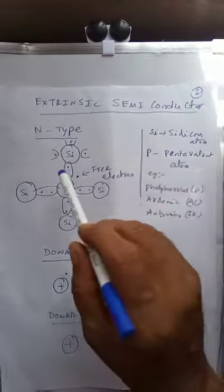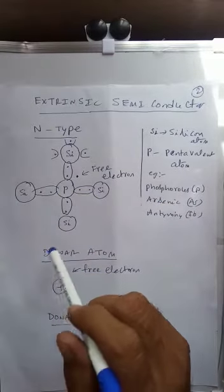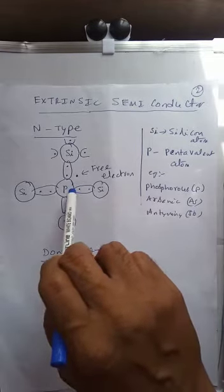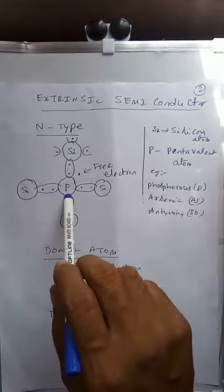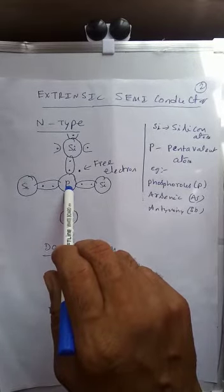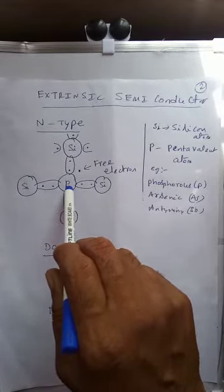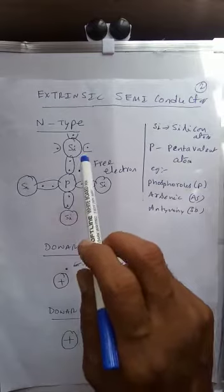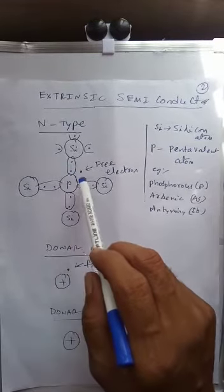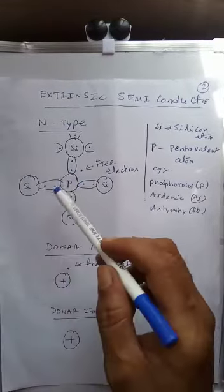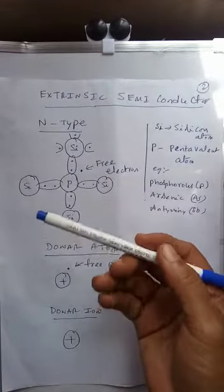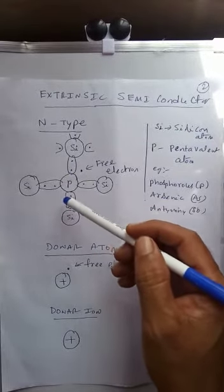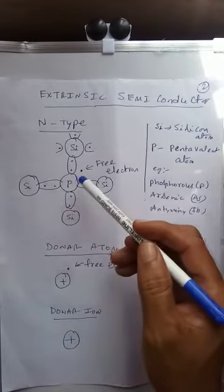If one pentavalent atom is added to the intrinsic semiconductor material, one silicon atom is replaced by this pentavalent atom. Since the pentavalent atom has five valence electrons, out of five, four electrons are shared with the neighboring atoms by forming covalent bonds.